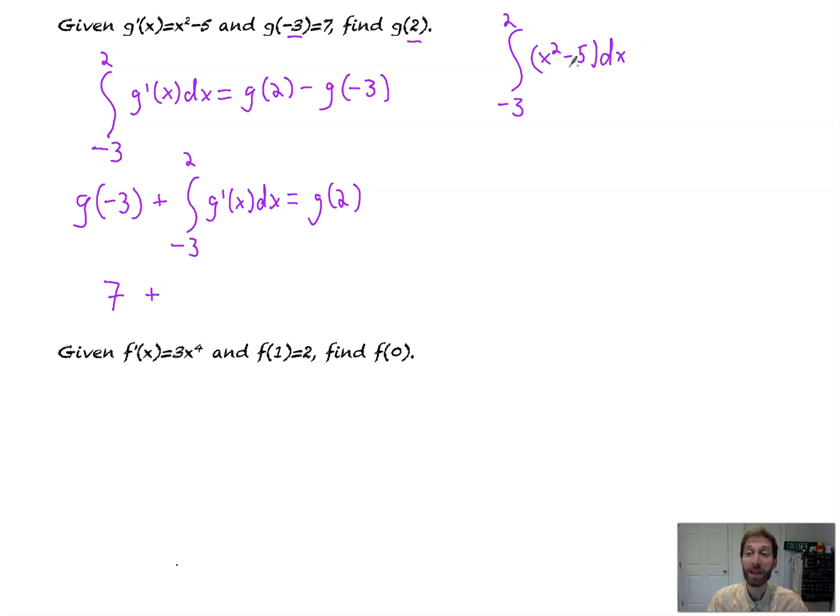First fundamental theorem time. The integral of x squared minus 5 is equal to x cubed over 3 minus 5 times x, all evaluated from negative 3 to 2. Nice. So all I'm going to do now is plug in each of these values and subtract.